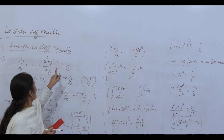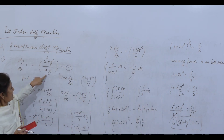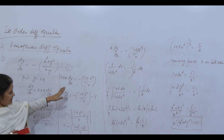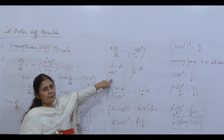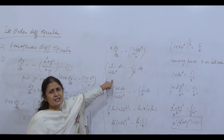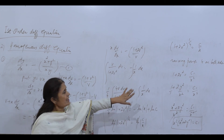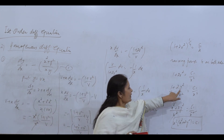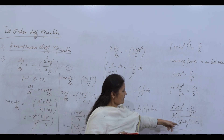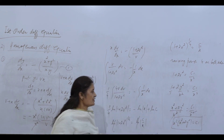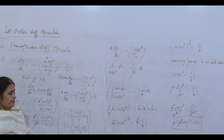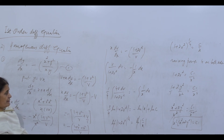This is the required solution of the homogeneous differential equation. Both functions were homogeneous of the same degree; we put y = vx, which made the equation variable separable in v and x; we integrated, found the solution, and substituted v = y/x back. You can solve the rest of the questions yourself.